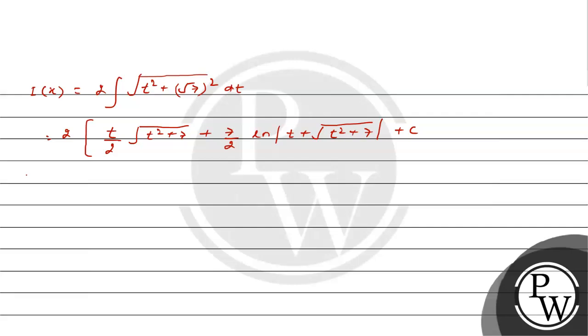Taking 2 as common, we can find I(x) as t√(t² + 7) plus 7 ln|t + √(t² + 7)| plus C.